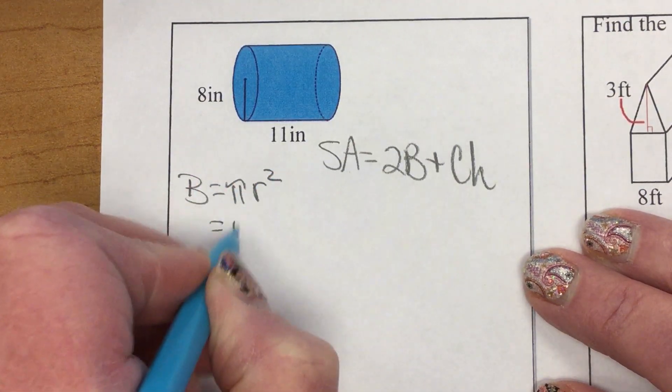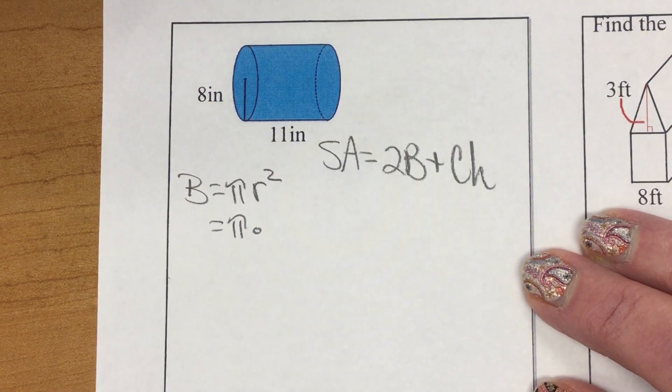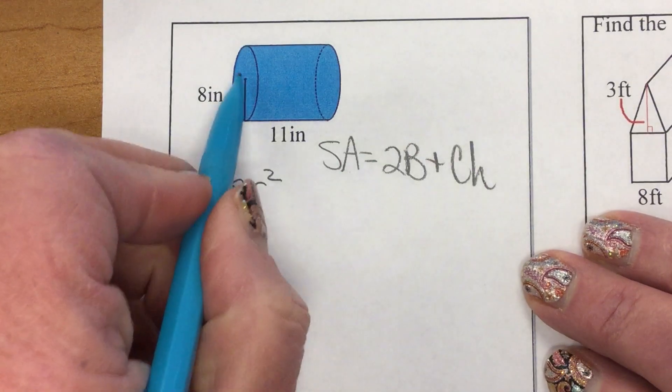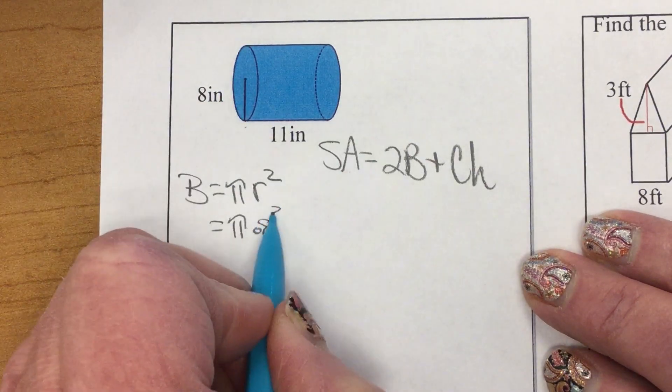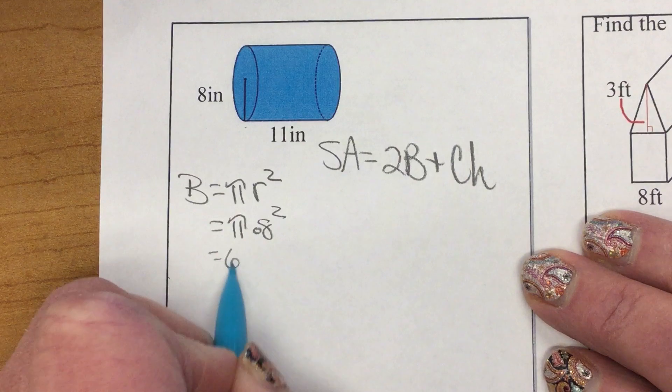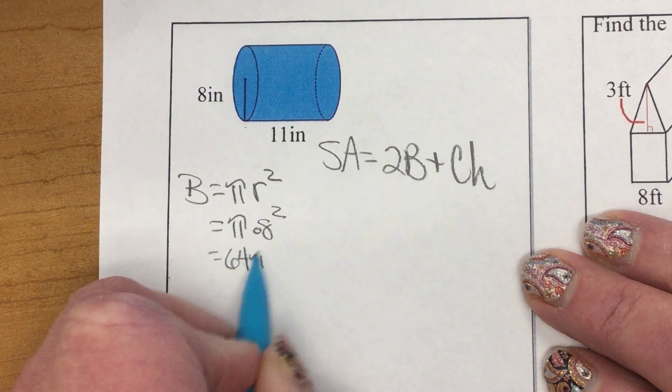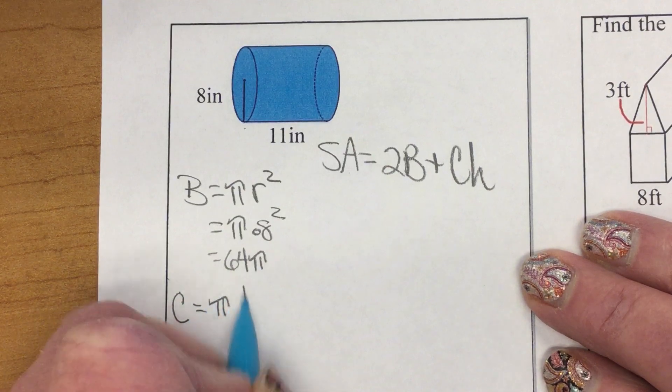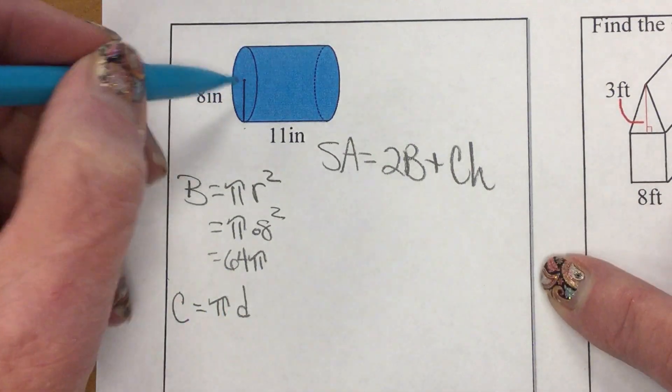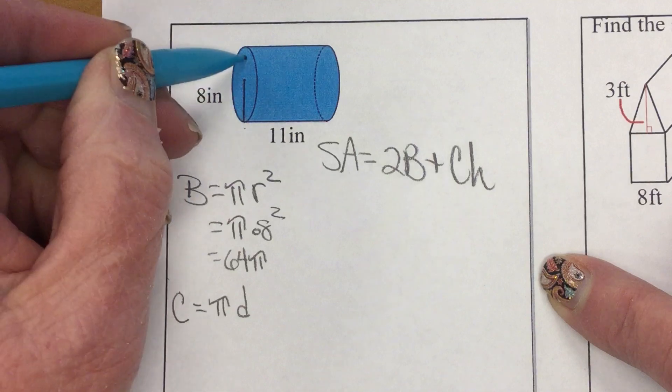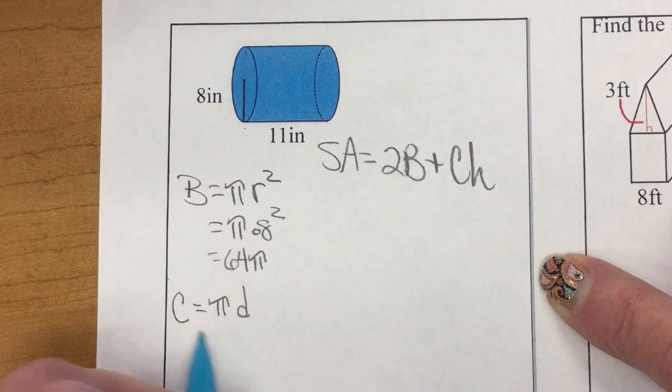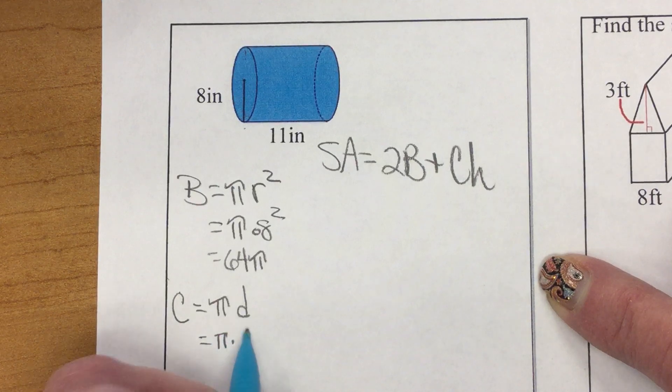Now, this area of the base is pi r squared. So, it's going to be pi, and we're going to leave it pi because we can, and it's going to make life so much easier. My radius is 8. 8 squared is 64. We're just going to call that 64 pi. Circumference is pi times d. Well, my diameter, if the radius is 8, diameter is all the way across 16. So, pi times 16.